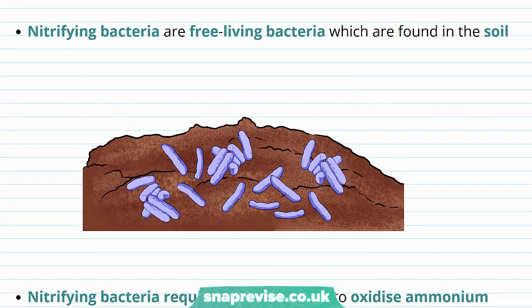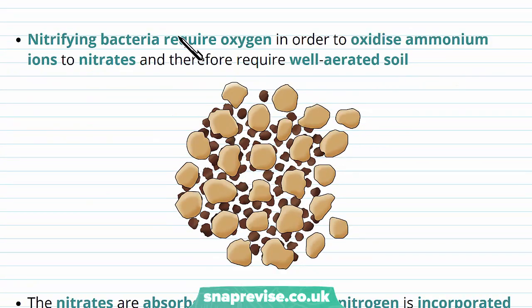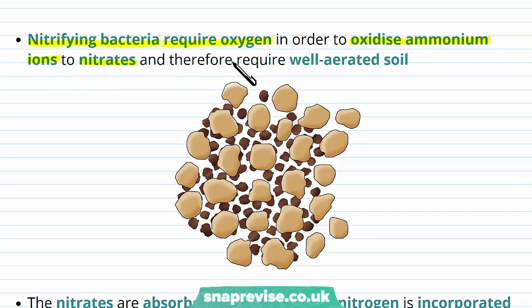The nitrifying bacteria are free-living bacteria and they're found living in the soil. These nitrifying bacteria need oxygen in order to oxidize the ammonium ions into nitrates, and therefore they have to have well-aerated soil.